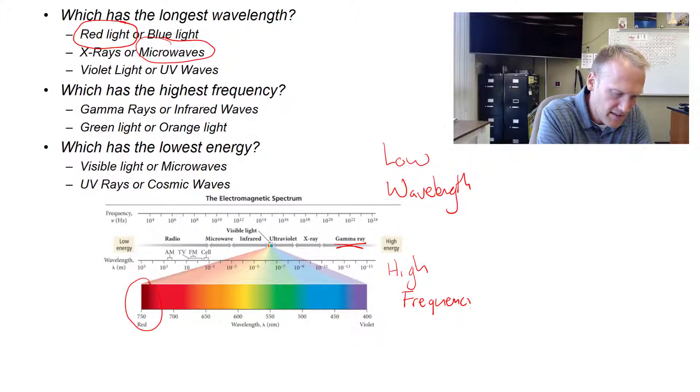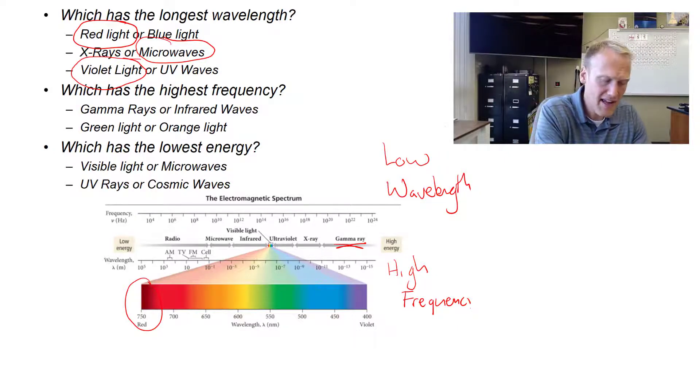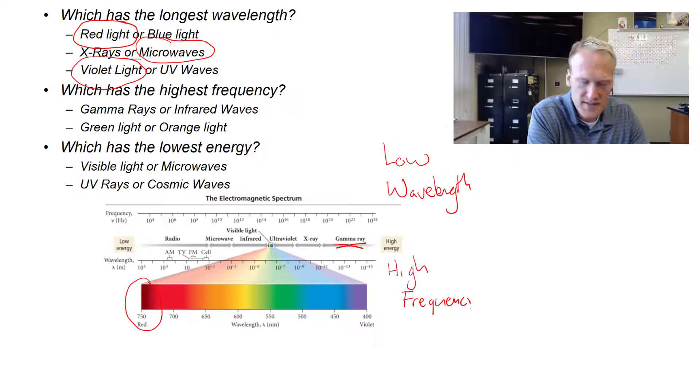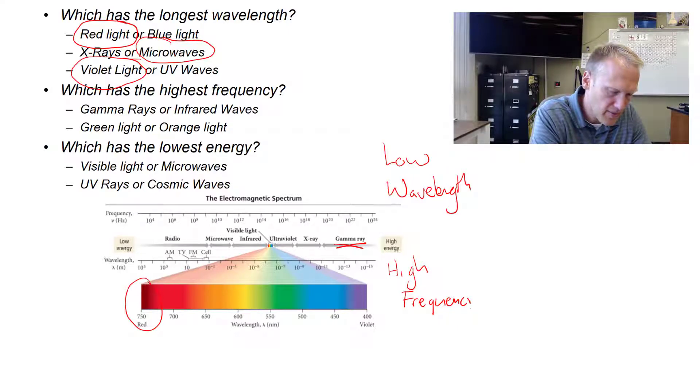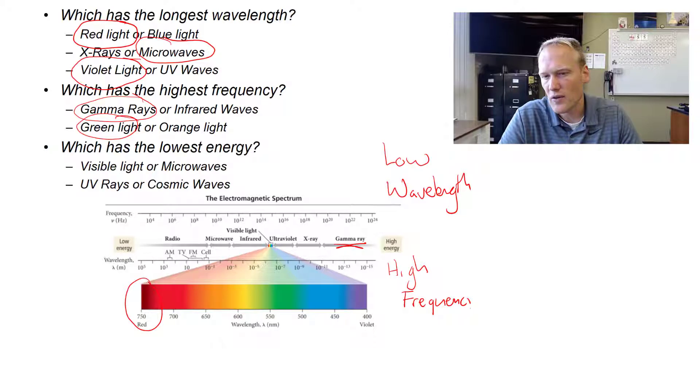Violet light or UV rays? Here's violet, and then ultraviolet would be here. So violet light would have a longer wavelength than ultraviolet. Which one has the highest frequency? These would be closest to the right. Gamma rays would be farther right than infrared, and green light would be farther right than orange. Therefore, green light has a higher frequency than orange light.